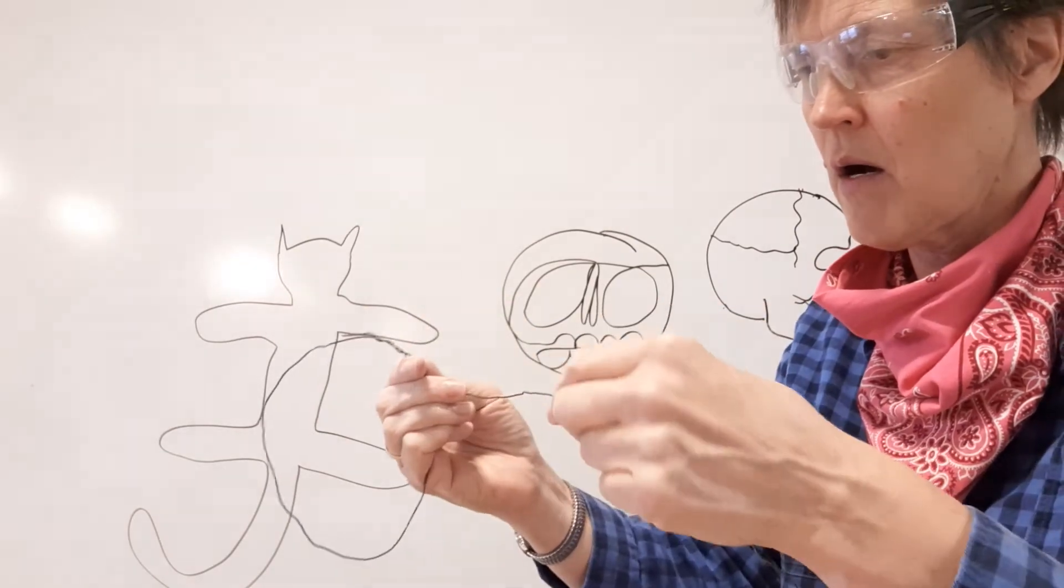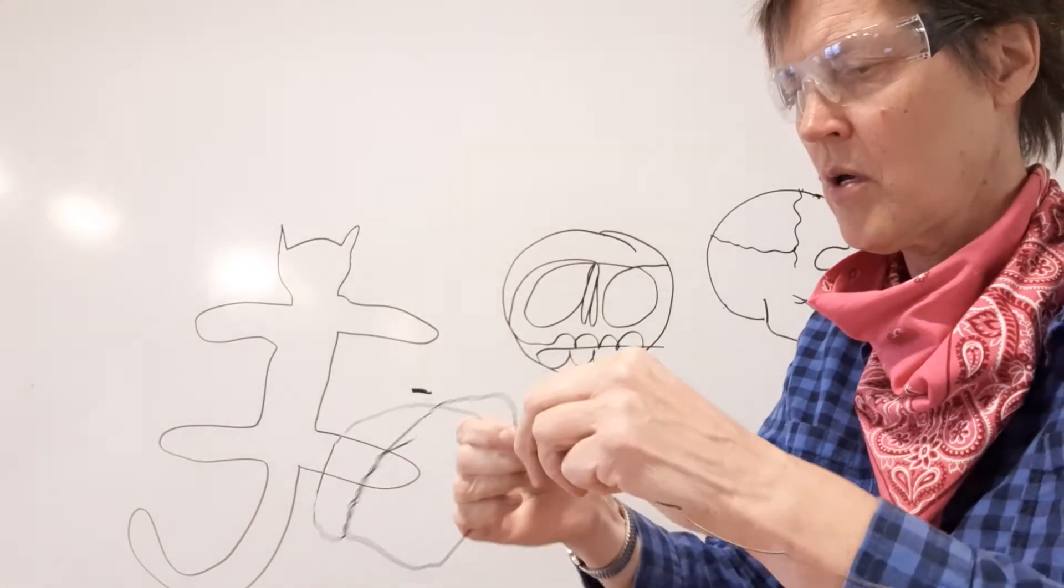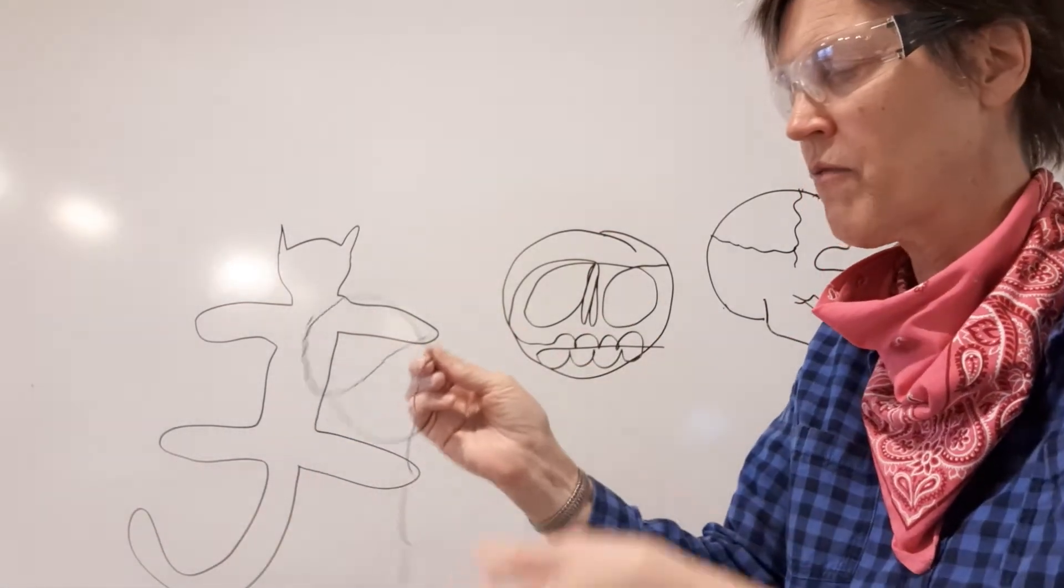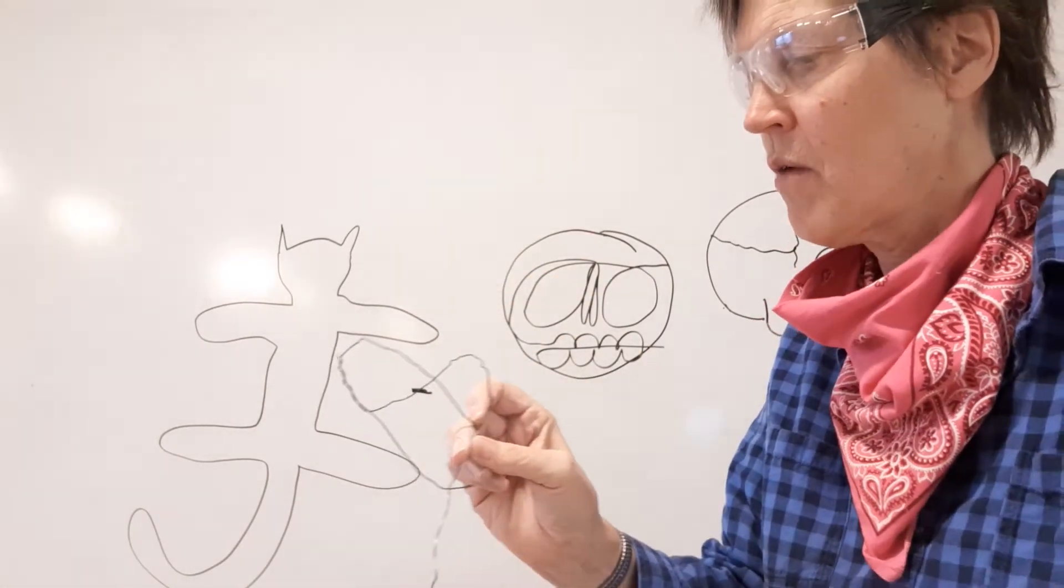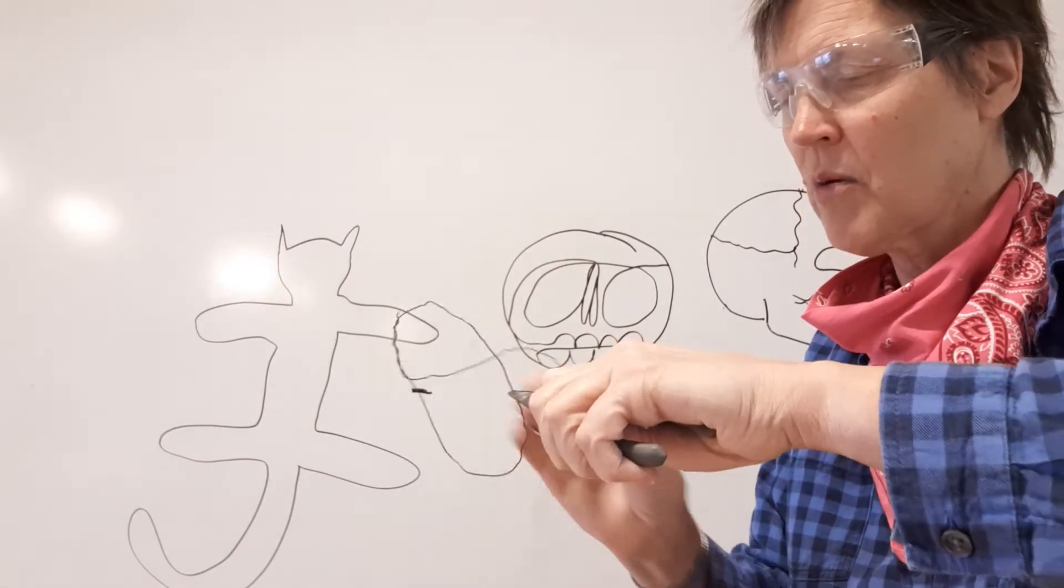The skull is going to need a back. So here one little trick is rather than, you could pull the wire through, which is a fine way to operate. You could also use your pliers if you wanted to make a knot or a connection right here to just pinch a little bit of your wire.